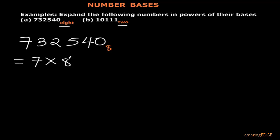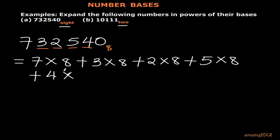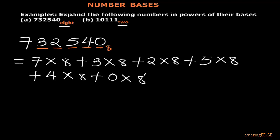The next digit is 3, so we have 3 times 8. The next digit is 2, so we have 2 times 8. Then the next digit is 5, so we have 5 times 8. The next digit is 4, so we have 4 times 8. And finally the last digit is 0, so we have 0 times 8. We are supposed to assign powers to these 8s — that is, they are powers of 8.